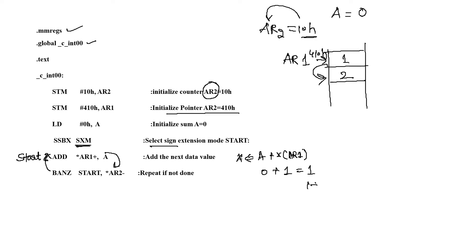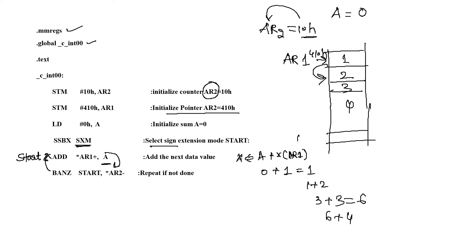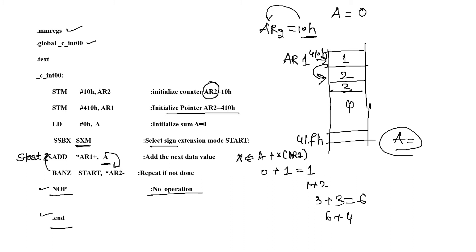After addition of the 10 different numbers — for example: 0+1, then 1+2, then if the next number is 3, that is 3+3, and if the next number is 4, that is 6+4 — it continues and stores the result each time in the accumulator. Until AR2 becomes 0, branching continues. Once it adds all values from 410 hexadecimal to 41F hexadecimal, the result is stored in the accumulator. Then a NOP instruction introduces some delay, and the end of the program is declared by the directive .end.